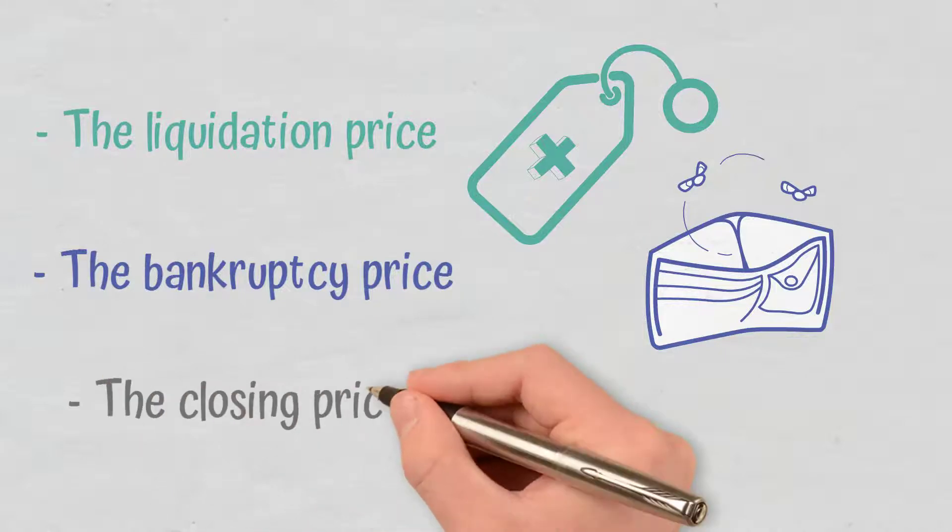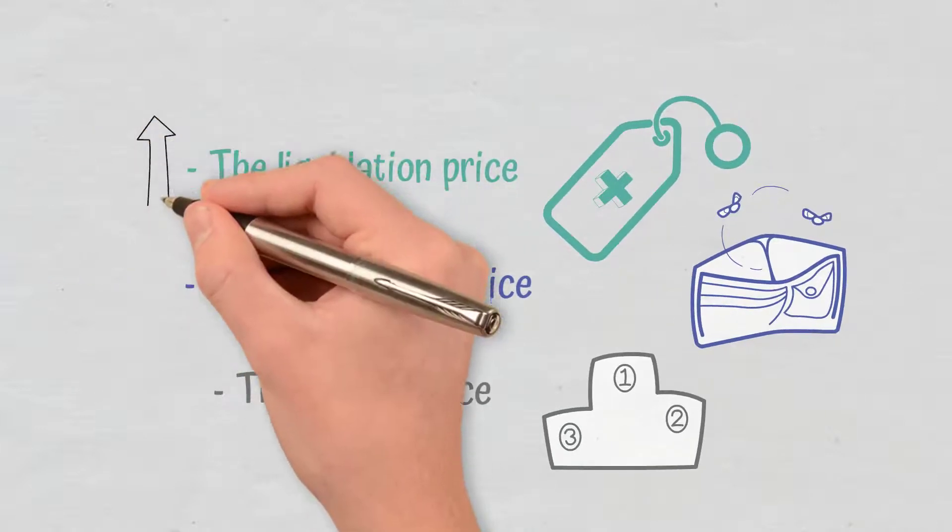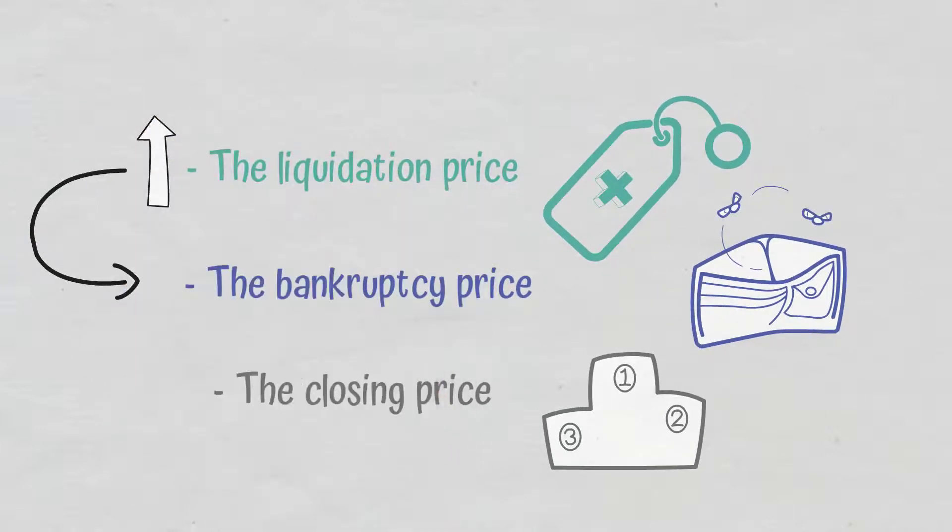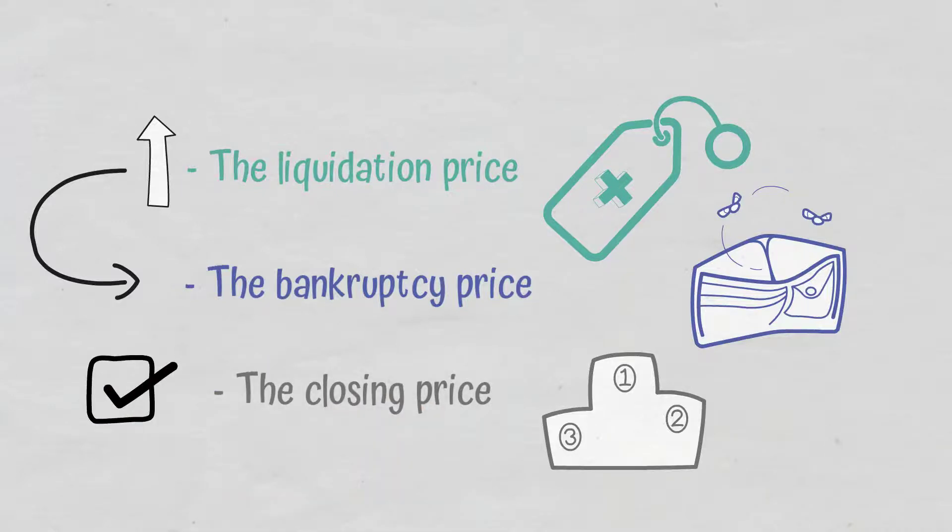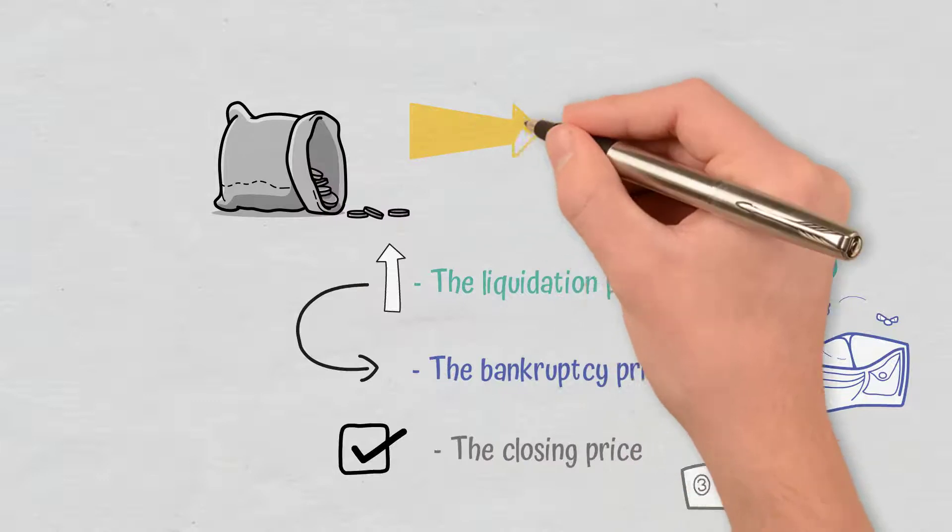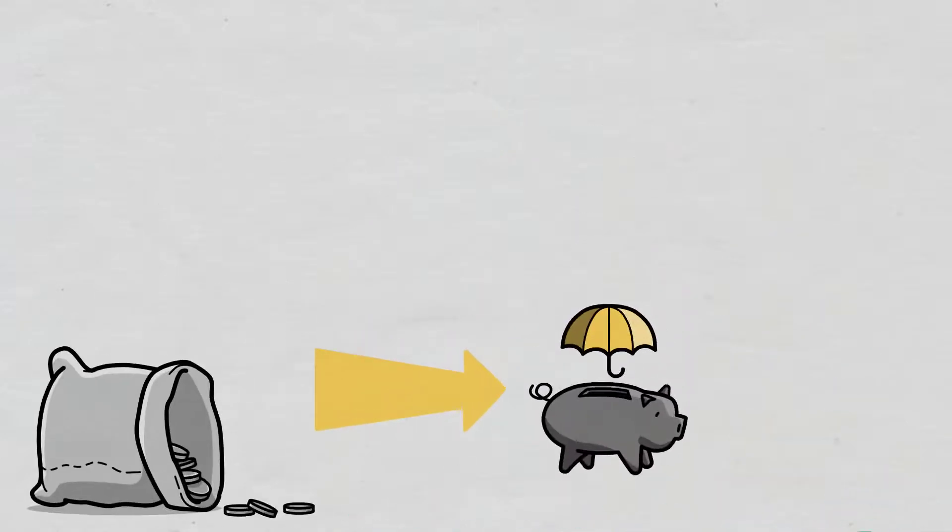If the liquidation price of a position goes higher than its bankruptcy price, then the position is closed and liquidated. A part of the remaining margin is usually added to the insurance fund, so an insurance fund grows from the contributions of liquidated accounts.